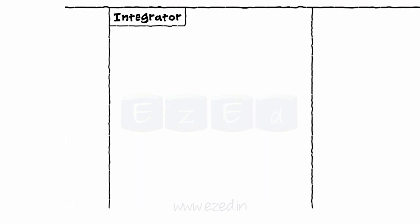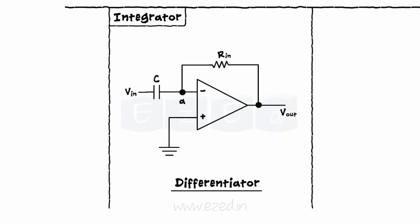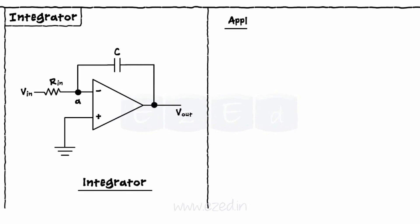The next use of an op amp is an integrator. If we interchange the position of the capacitor and the resistor of a differentiator circuit, we get the circuit of an op amp as an integrator. Applying KCL at node A, IN equals IC.